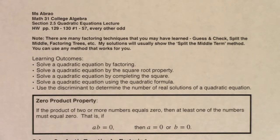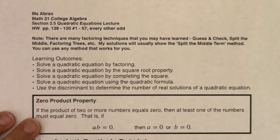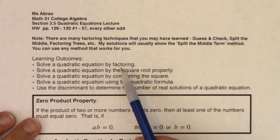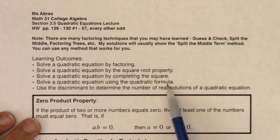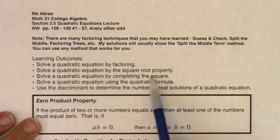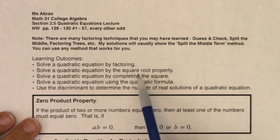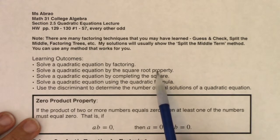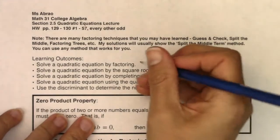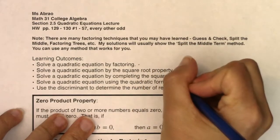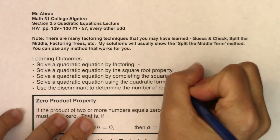We're going to spend this section solving quadratic equations, and there are three main methods for doing that: you can solve a quadratic equation by factoring, by completing the square, or using the quadratic formula. I'll talk about the square root property a little bit — that's a fourth version, but really it's just a derivative of completing the square. So we're going to spend some time on factoring, completing the square, and the quadratic formula.